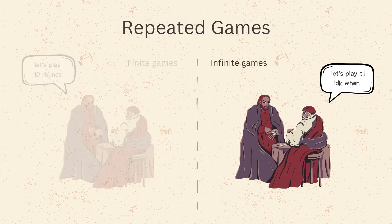Infinite games are those in which the game is being played an infinite number of times. A game with an infinite number of rounds is also equivalent, in terms of strategies to play, to a game in which the players do not know for how many rounds the game is being played. Infinite games, or games that are being repeated an unknown number of times, cannot be solved by backward induction as there is no last round to start the backward induction from.